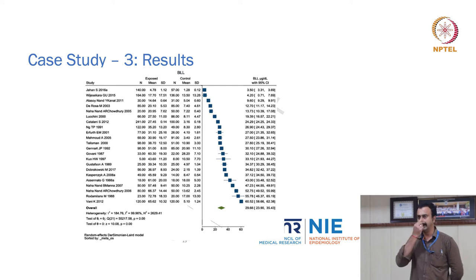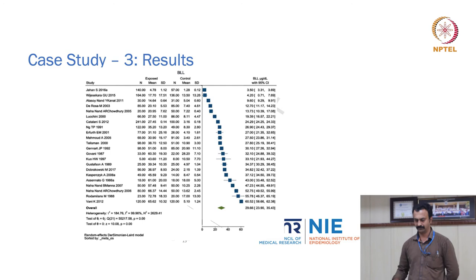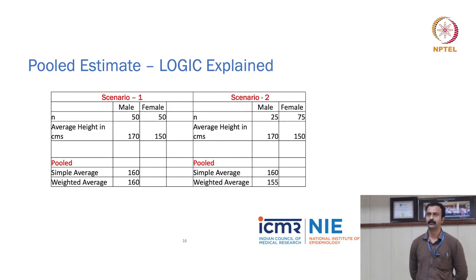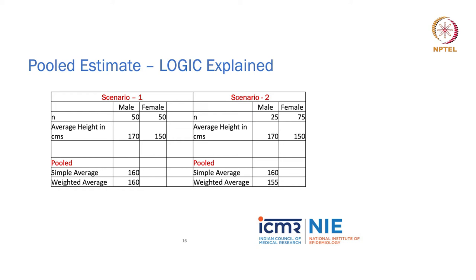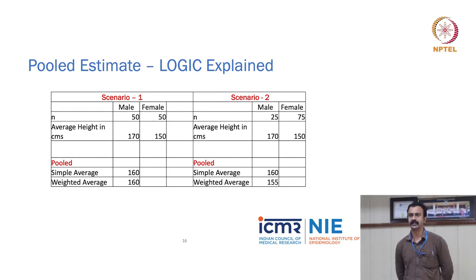The idea behind data synthesis is to provide a summary of all studies. Here is the logic behind pooled estimates: consider two groups — males and females — with average heights in centimeters. In scenario one, there are 50 males and 50 females out of 100, with average heights of 170 cm and 150 cm respectively. The simple average is 160 and the weighted average is also 160, since the distribution is equal.